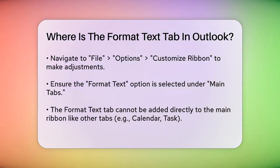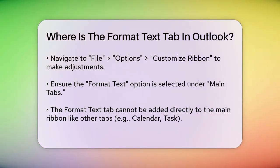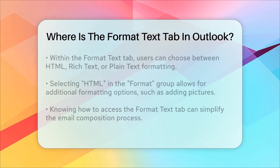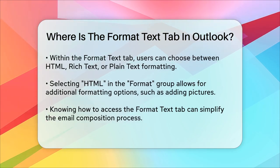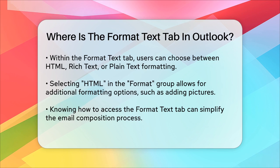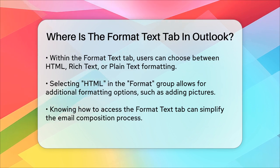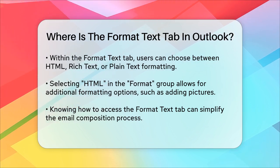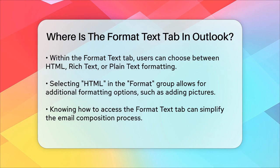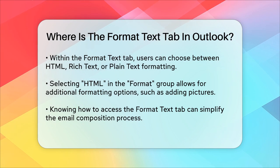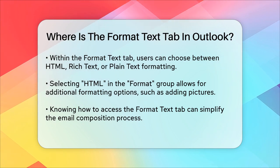When you do have the Format Text tab open, you can switch between different formatting options like HTML, Rich Text, or Plain Text. For example, if you want to use HTML formatting, you can select HTML in the Format group within the Format Text tab. This allows you to change the format of the text, add pictures, and use various formatting options like font styles and bullet points.